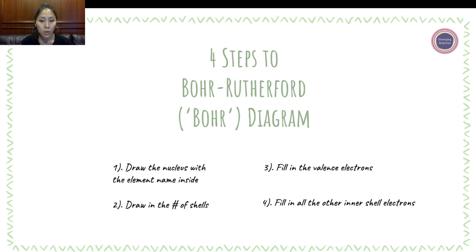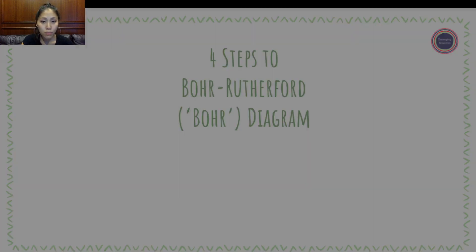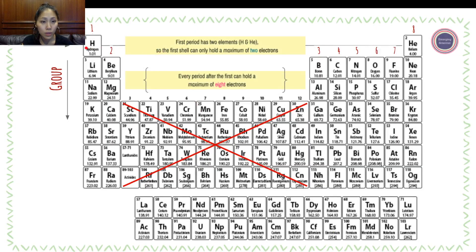One key thing I want you to remember is that the first shell only contains two electrons. That's because if we look at period 1, period 1 only has hydrogen and helium. That's only two, right? The maximum atomic number here is two, which means there's only two electrons.